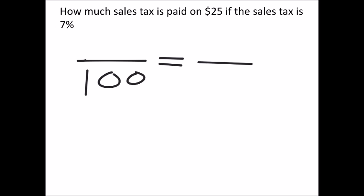It's out of 100. We got a 7% sales tax. The tax is always going to be in the numerator because it's part of the total. So we got a total of $25, and we want to know what the tax is on this thing.